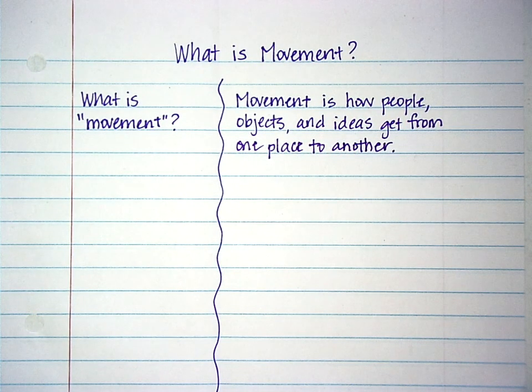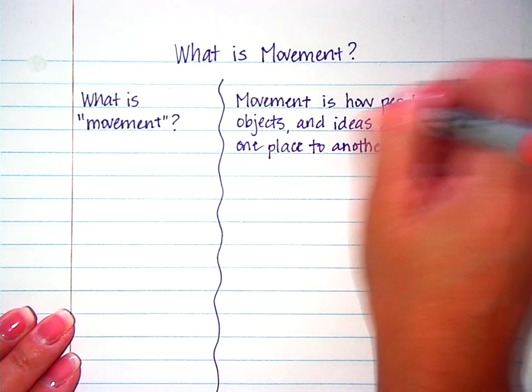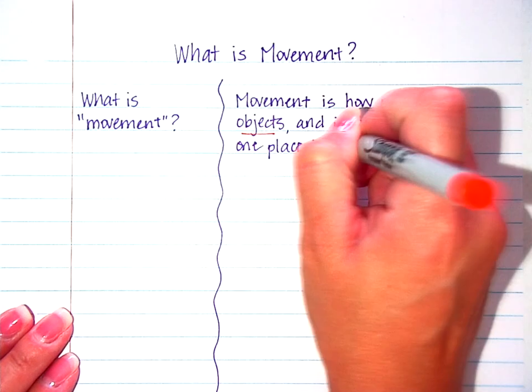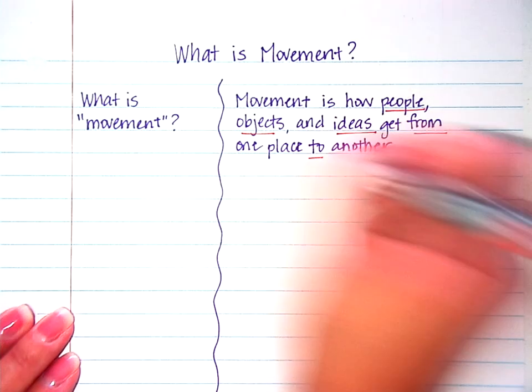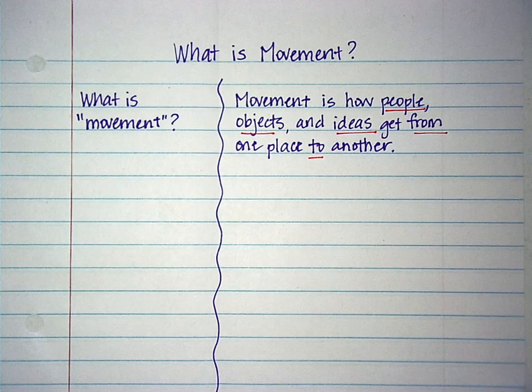And then using your highlighter, you're going to highlight some key terms. I'm going to underline them. People, objects, ideas, from, to. That's what we're looking at for movement.